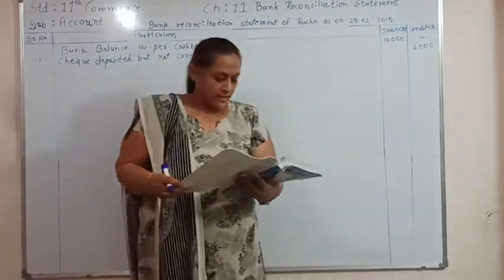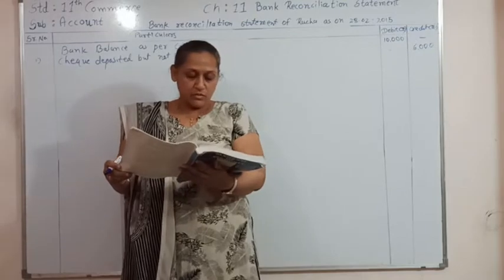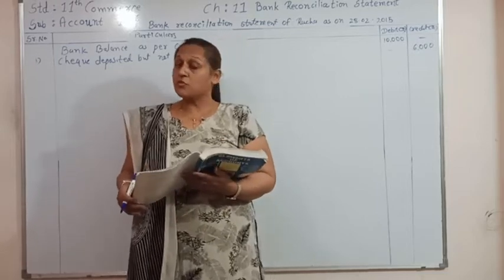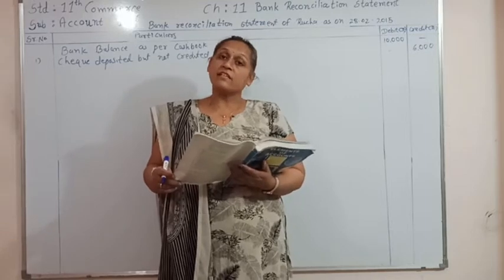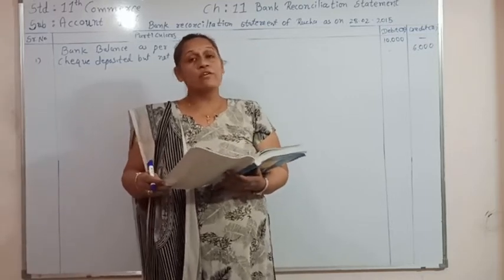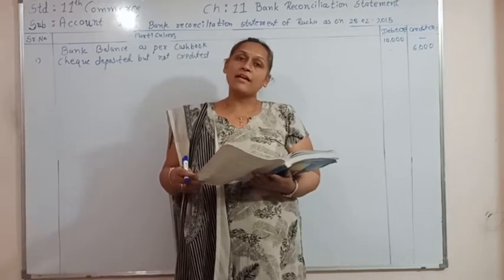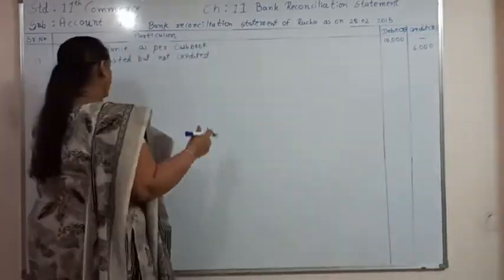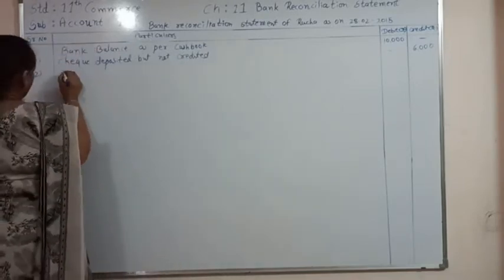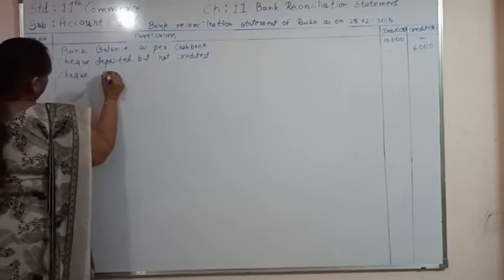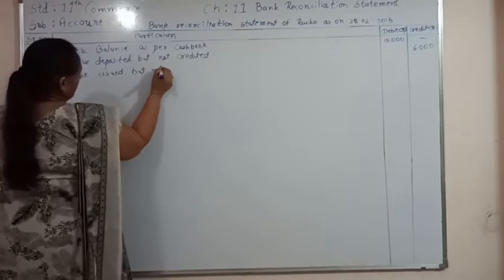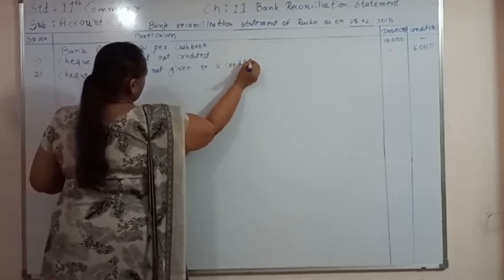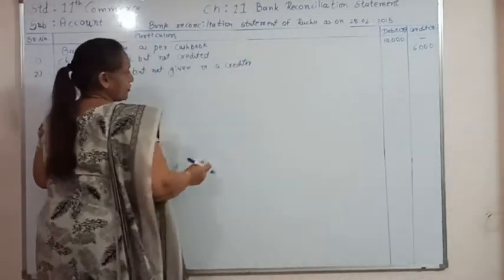Second transaction: a cheque of ₹4,000 is issued and recorded in cash book but it was forgotten to be given to the customer. The issued cheque is credited in the cash book but remains debited in the passbook. So here we are going to debit it in the bank reconciliation statement by ₹4,000. Second entry: cheque issued but not given to the creditor — ₹4,000, written on the debit side.